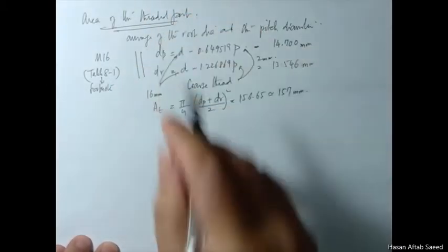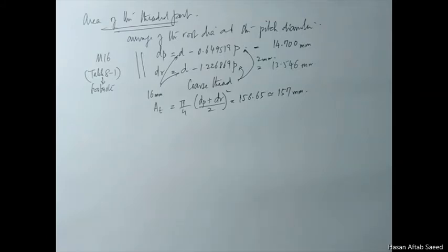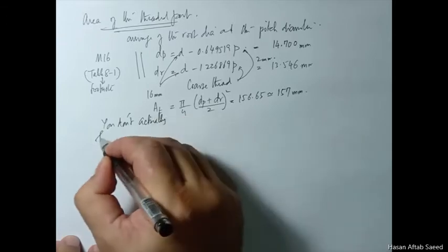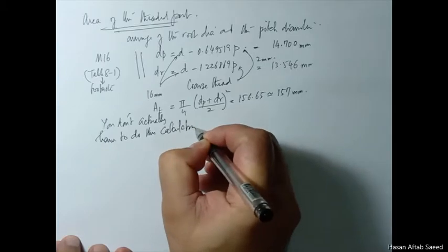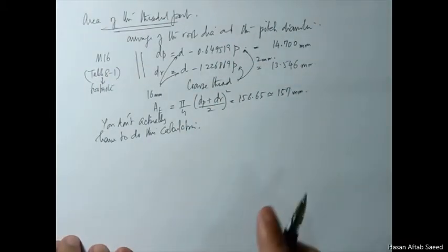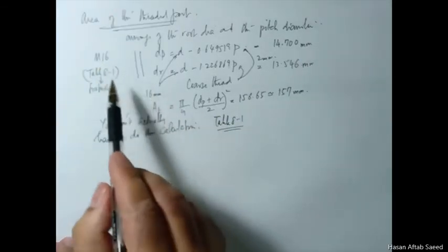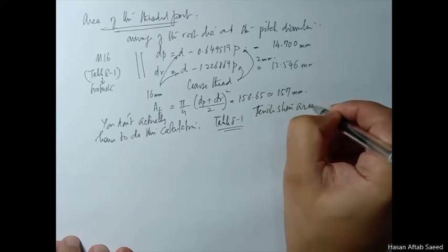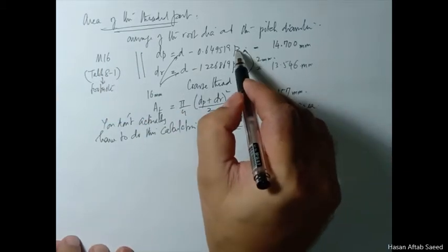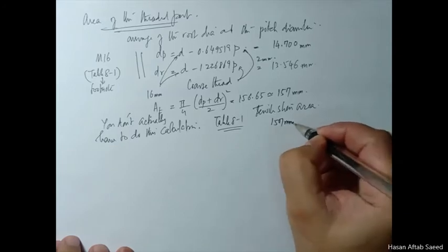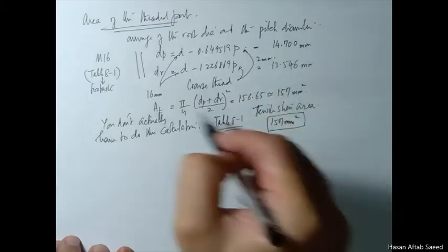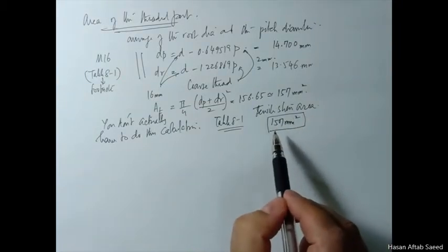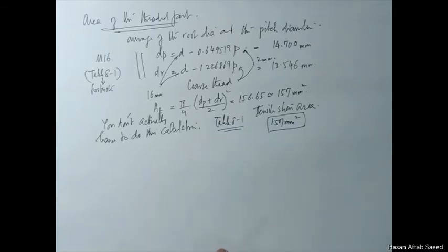Luckily you don't have to do all this exercise because it has been done already. If you go to Table 8.1 and read against M16 coarse pitch (2 mm), the column titled 'tensile stress area' gives 157 mm² — which we have just verified. For other sizes you don't need to go through this calculation; just read it off the table. So much for the areas, which will come into play very soon.